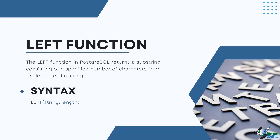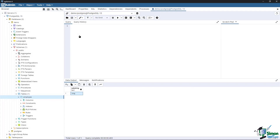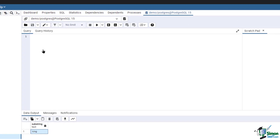The LEFT function in PostgreSQL returns a substring consisting of a specified number of characters from the left side of the string. The syntax is: LEFT(string, length). Here, string is the input string from which the substring is to be extracted, and length is an integer specifying the number of characters to be returned from the left side. For example, the following query returns the first 13 characters from the left side of the string 'I am the king of the world'.